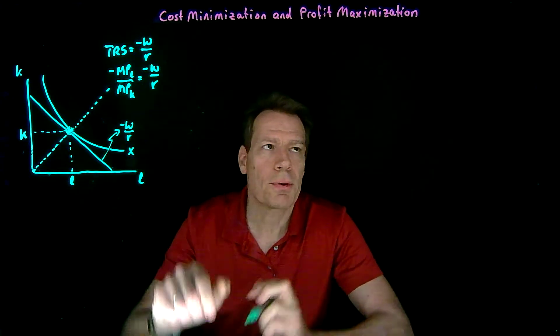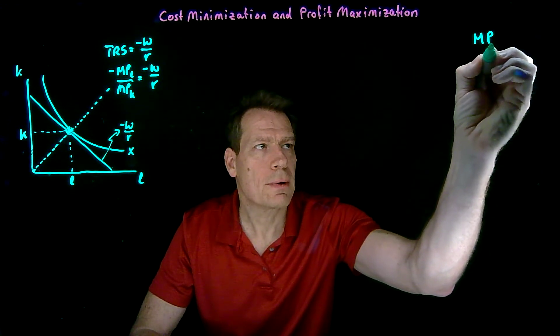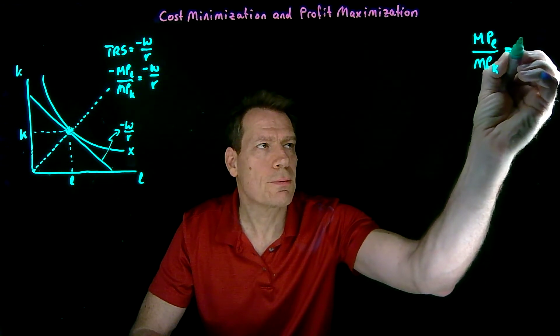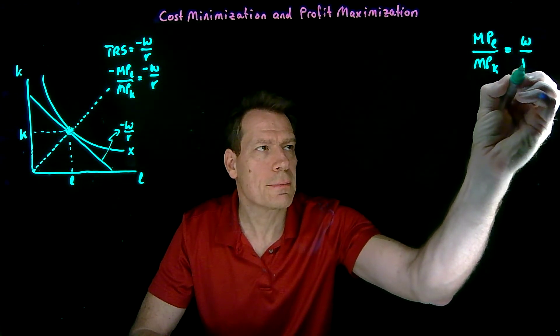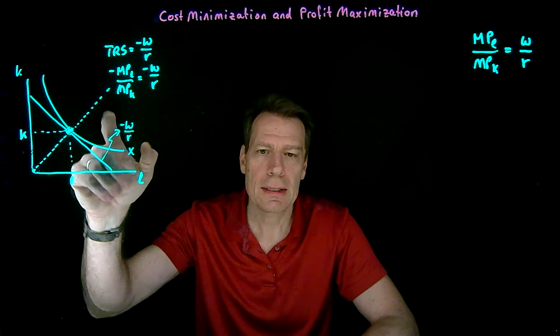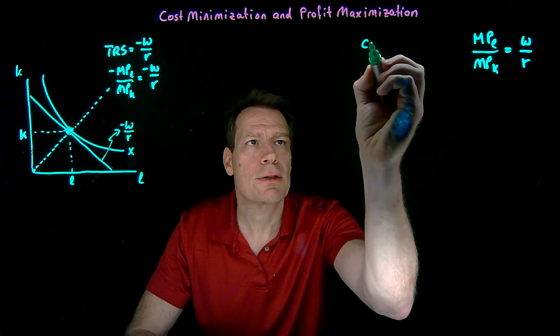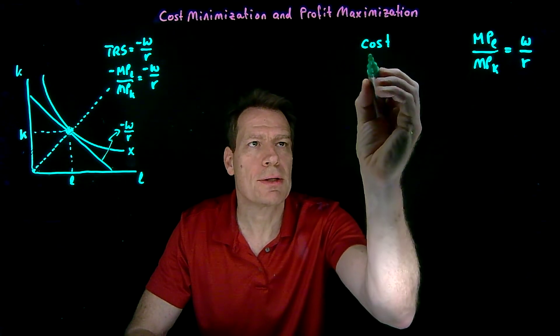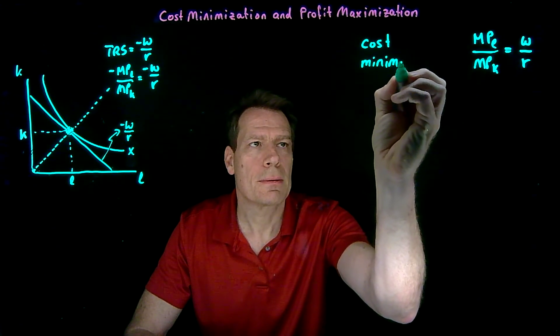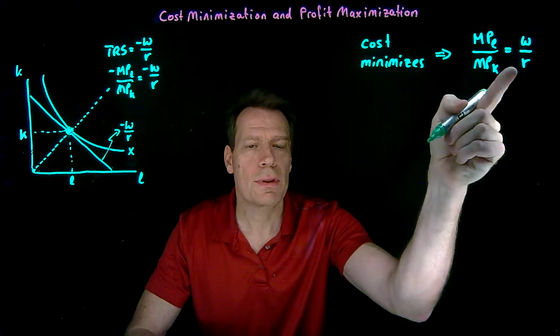And since there's a negative sign on both sides, I can just write this as the marginal product of labor divided by the marginal product of capital. That's equal to the ratio of these input prices. So when we produce output levels in a cost-minimizing way, when a firm engages in the first step of the two-step profit maximization and cost minimizes, it has to be that it chooses production plans where this holds.